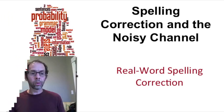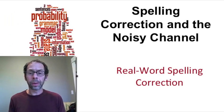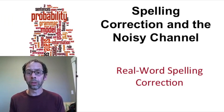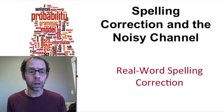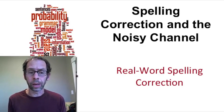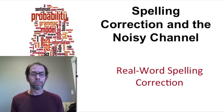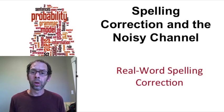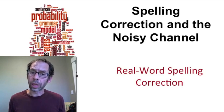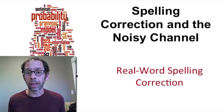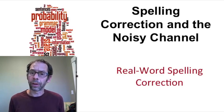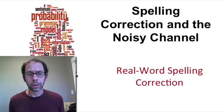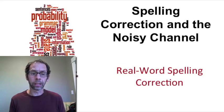In summary, real word spelling correction can be done with the same noisy channel algorithm used for non-word spelling correction. But we can also use a classifier-based approach where we combine a lot of features and build classifiers for very frequent kinds of errors we want to model explicitly.